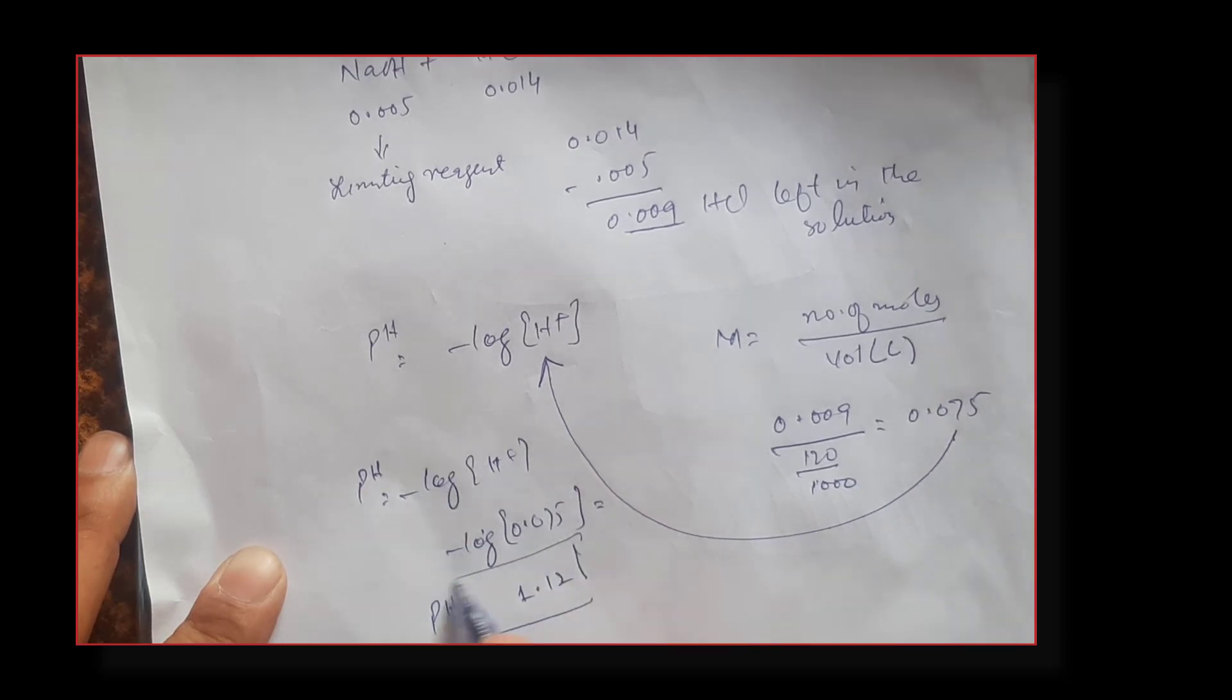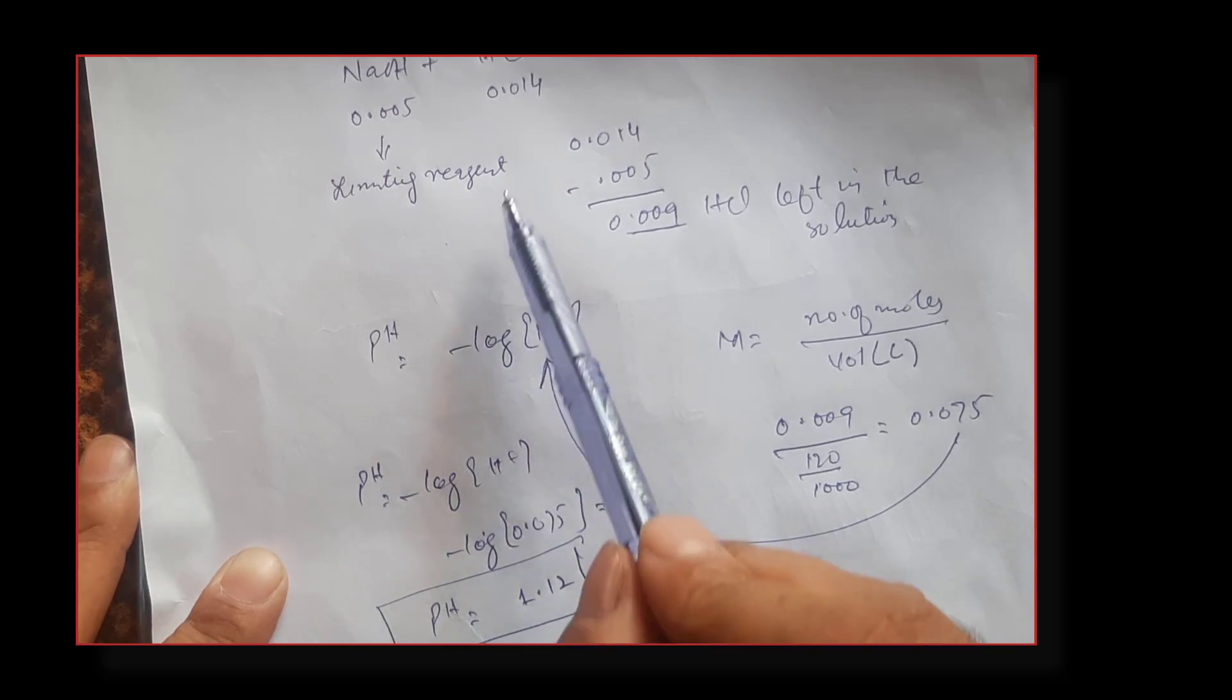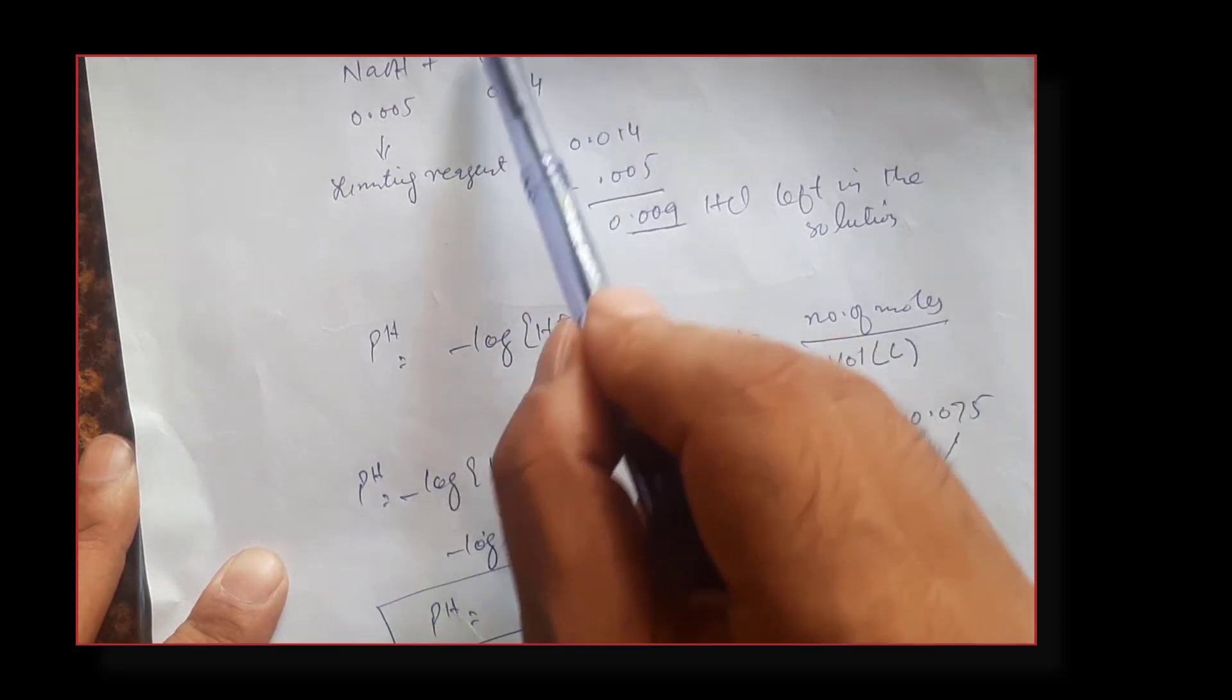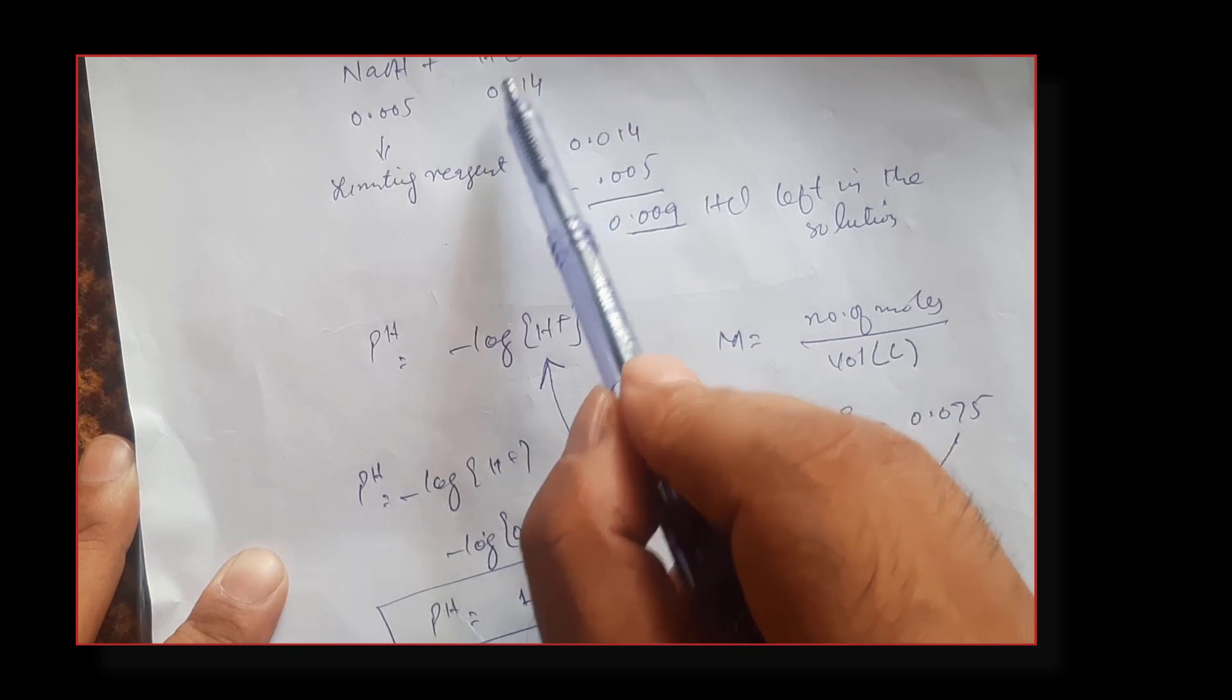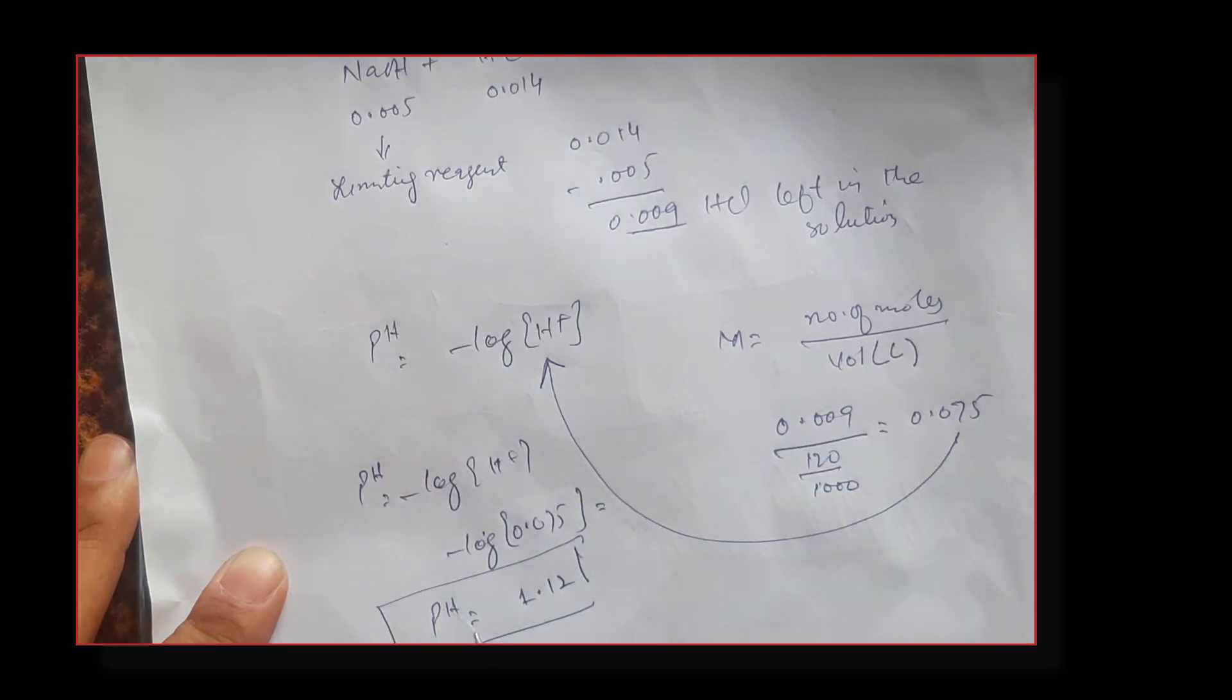You can see the resulting solution is acidic. As we already knew, some HCl would be left behind in the solution, and this has proven that the pH is acidic. I hope you found this tutorial useful. Please give it a thumbs up. Let me know other pH problems you have. Thanks for watching.